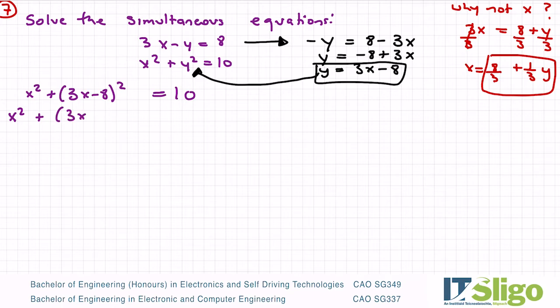So 3x minus 8 squared is that: x squared plus 3x by 3x is 9x squared, 3x by minus 8 is that, same again minus by minus is a plus 64.